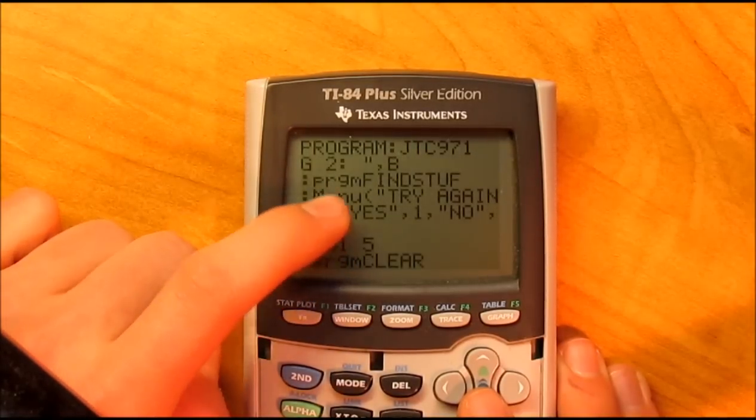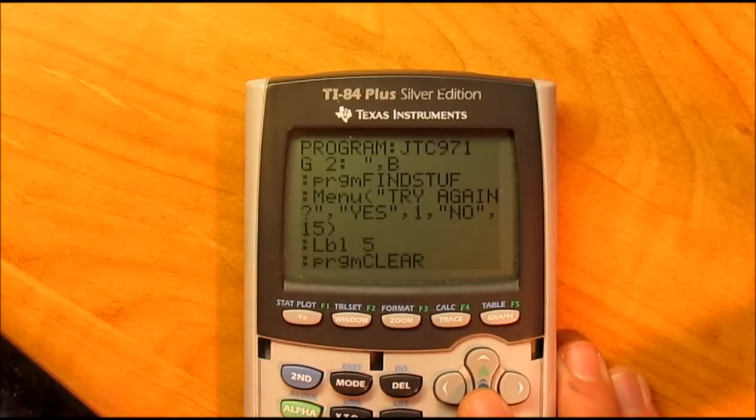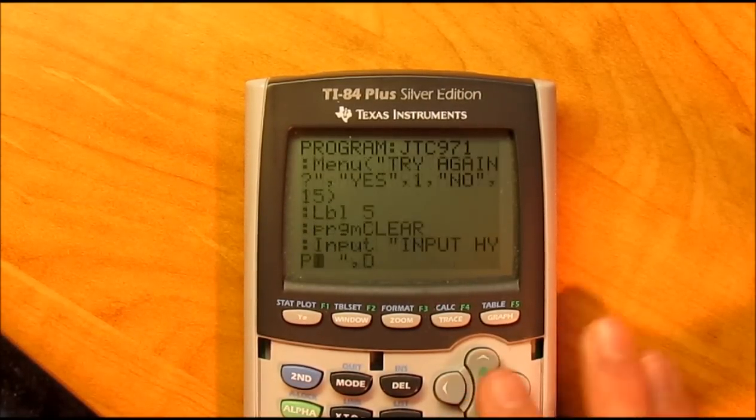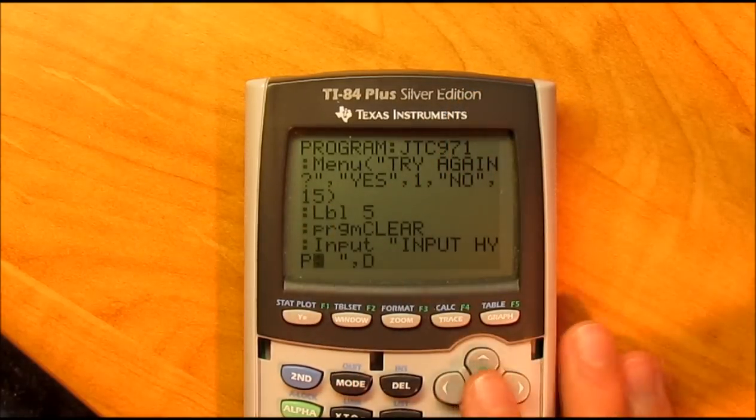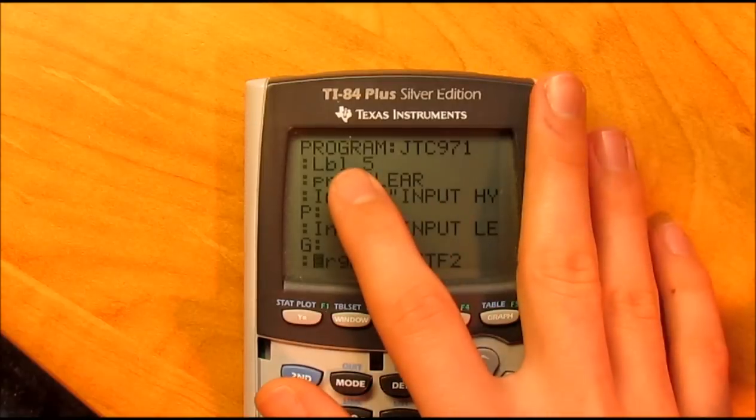After that program is done, it'll bring you back here and it'll say menu try again, yes 1, no 15. That'll take you back to the beginning, and if not, that'll take you to the end and it'll stop the program. Then we got label 5.